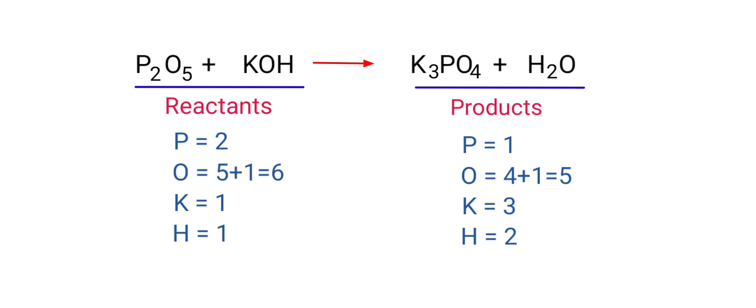If you look at this equation, the equation is not balanced. On the reactants side there are 2 phosphorus atoms, 6 oxygen atoms, 1 potassium atom, and 1 hydrogen atom. On the products side there are 1 phosphorus atom, 5 oxygen atoms, 3 potassium atoms, and 2 hydrogen atoms.